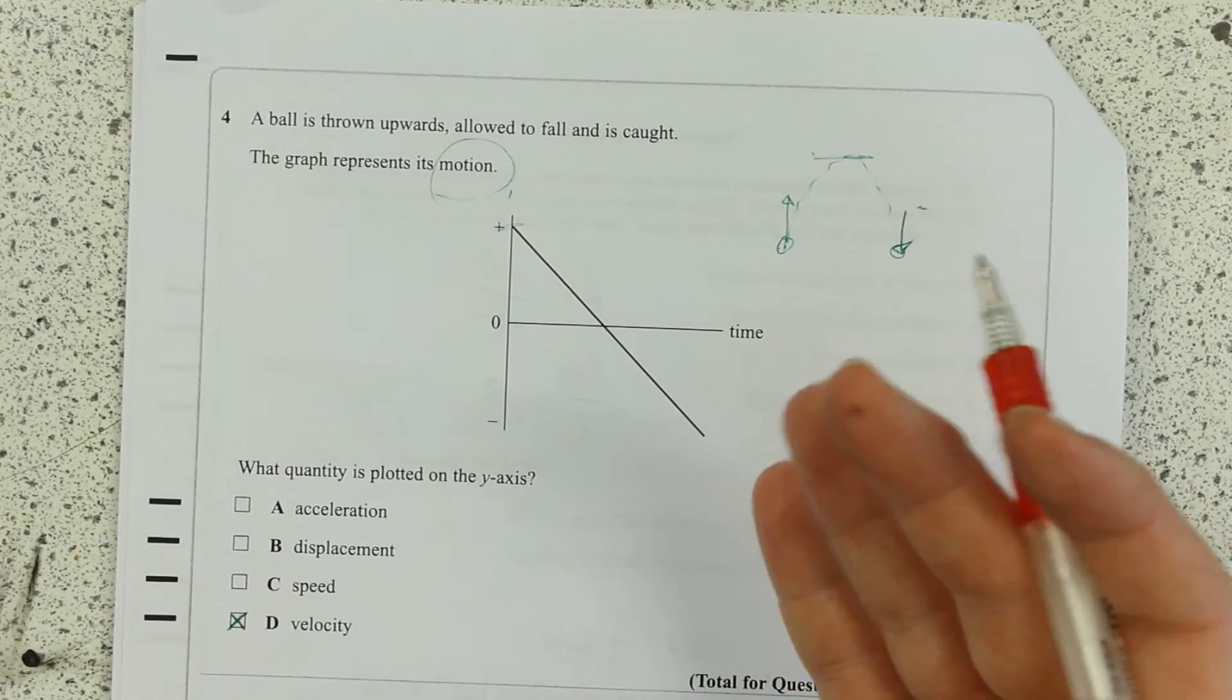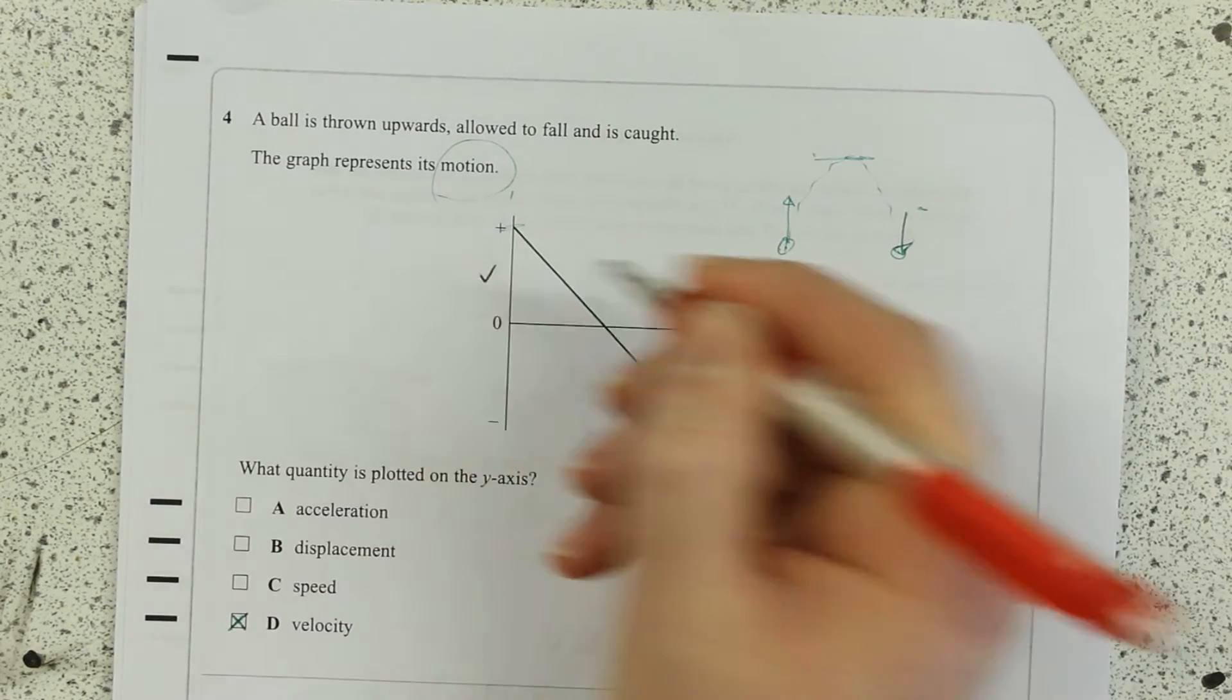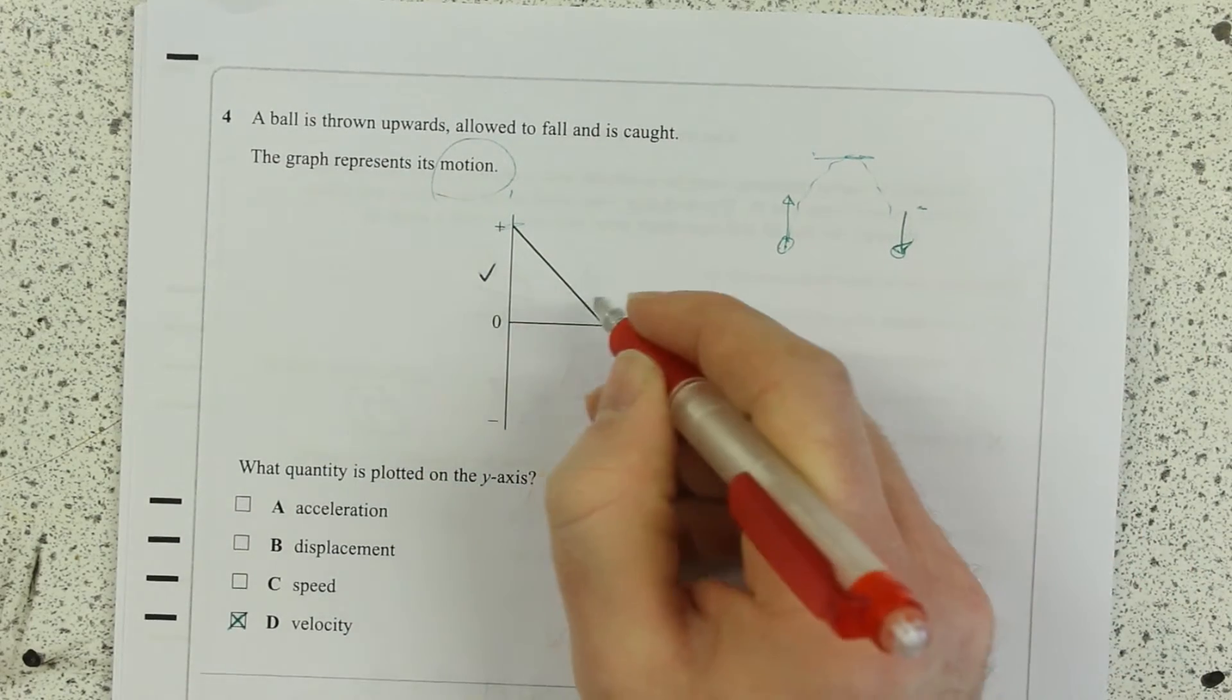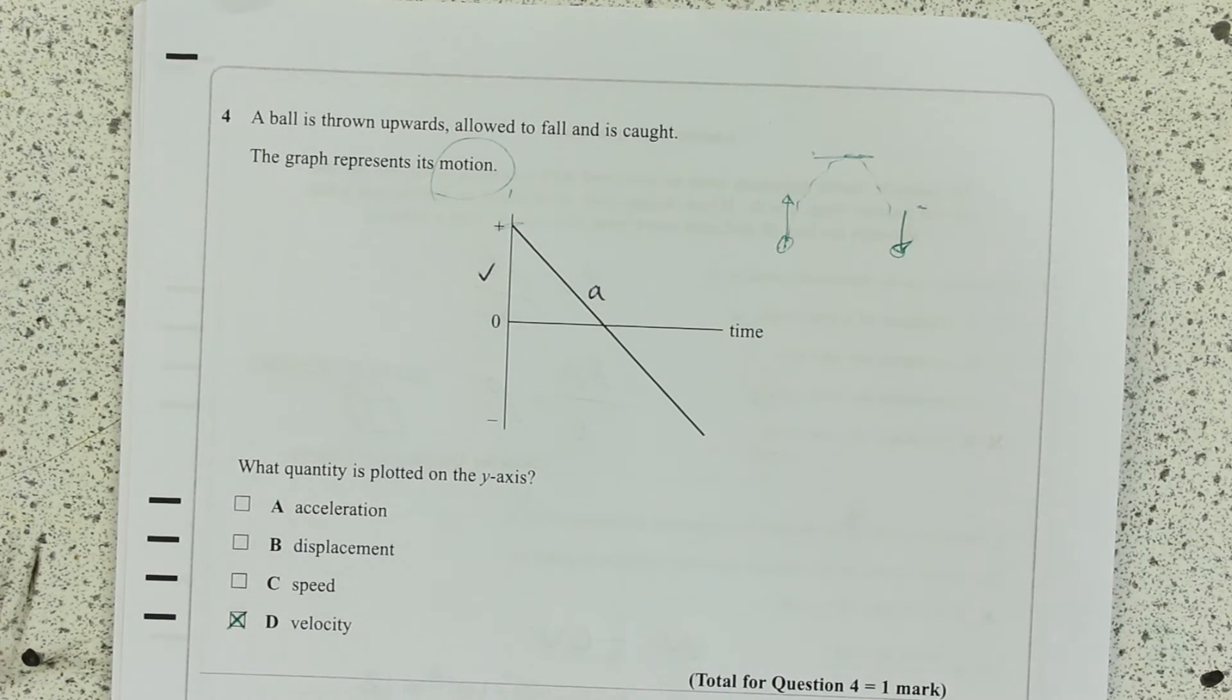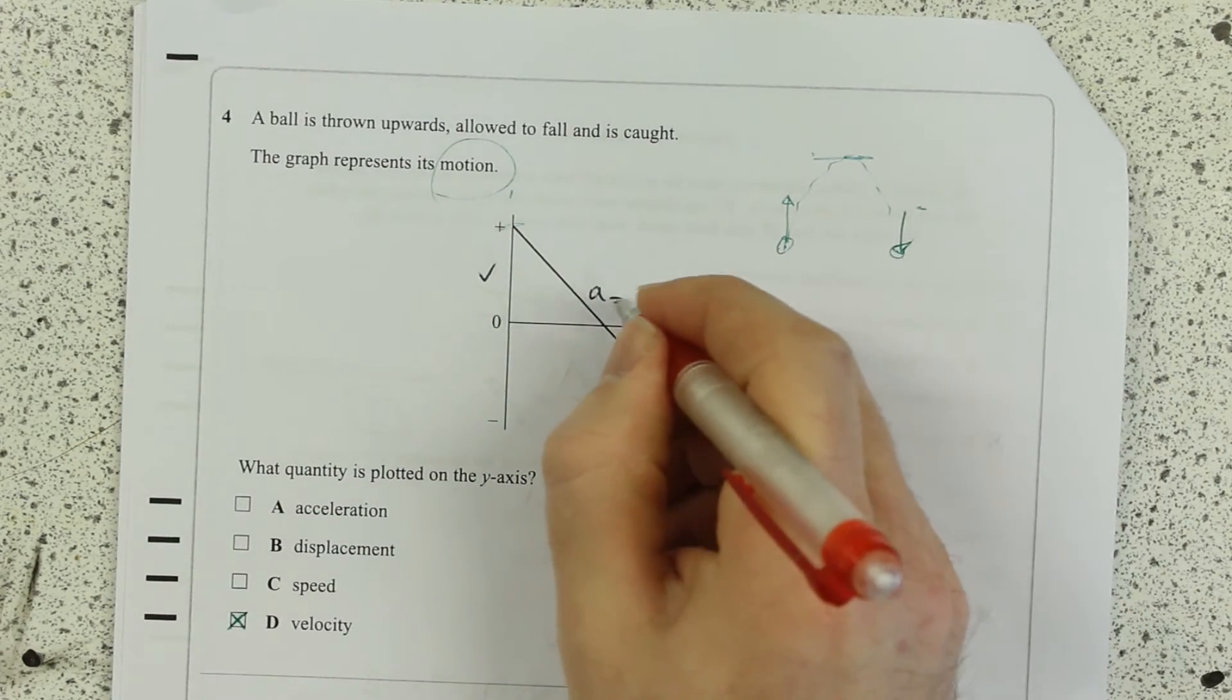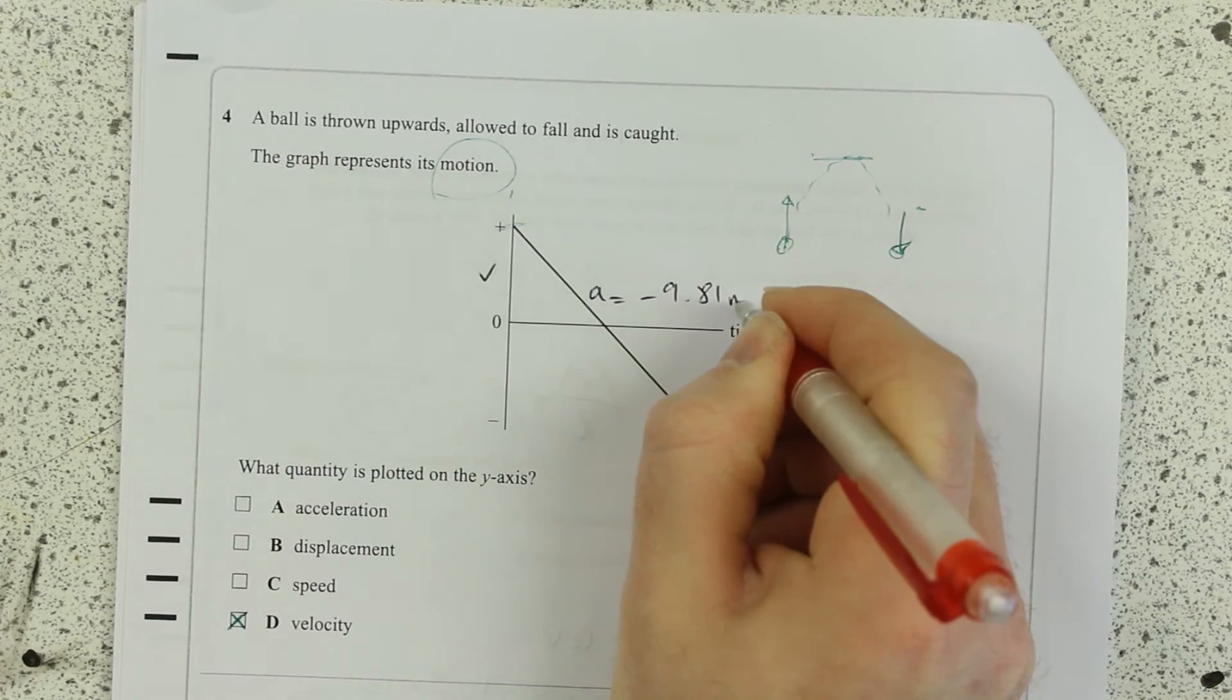straight line, think constant gradient. What's the gradient of a v versus t graph? Well, that's a - so constant acceleration. Constant and negative - it's going to be acceleration due to gravity. I hope